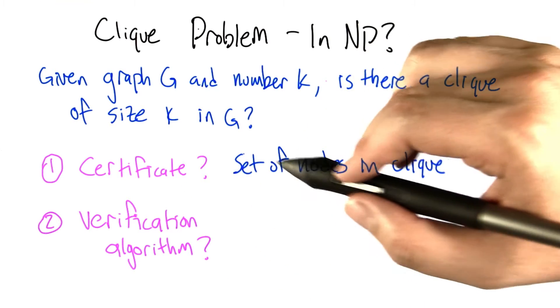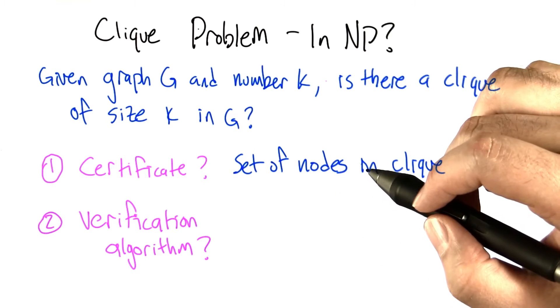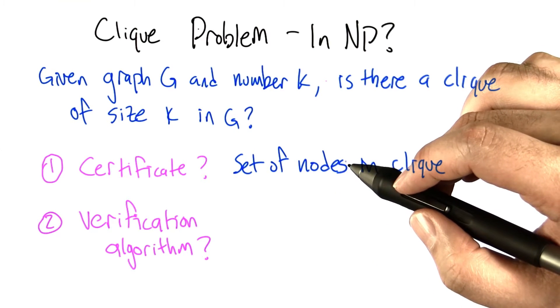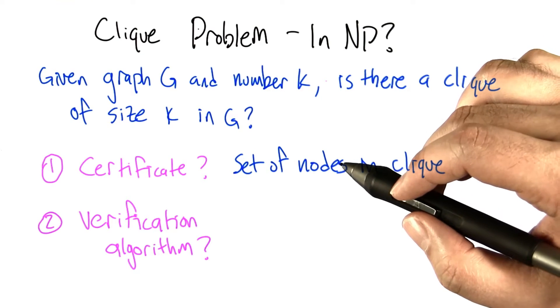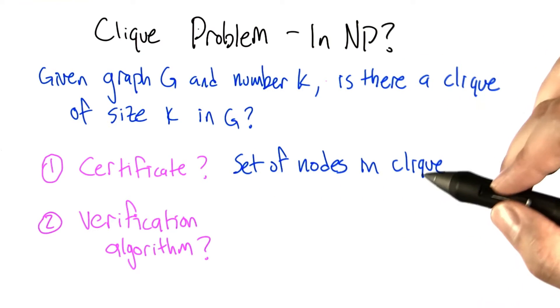You should by now have a sense that the certificate in this case is actually pretty straightforward. If I tell you that there's a 4-clique in the graph, the way I can convince you that there's one there is I'd give you the 4 nodes that make up the clique.